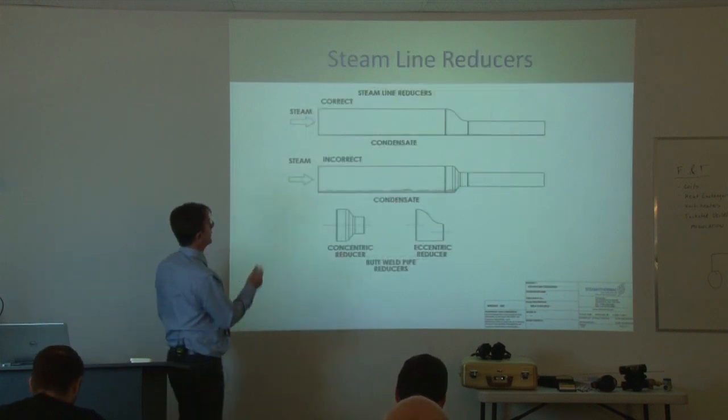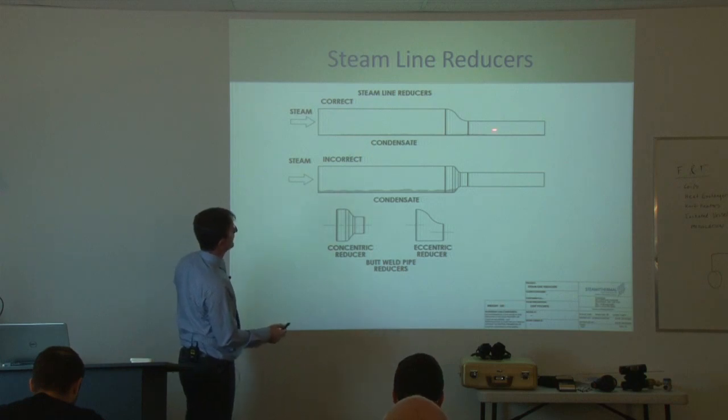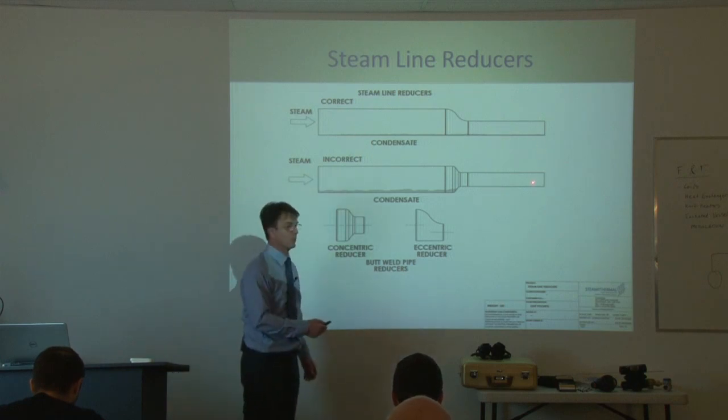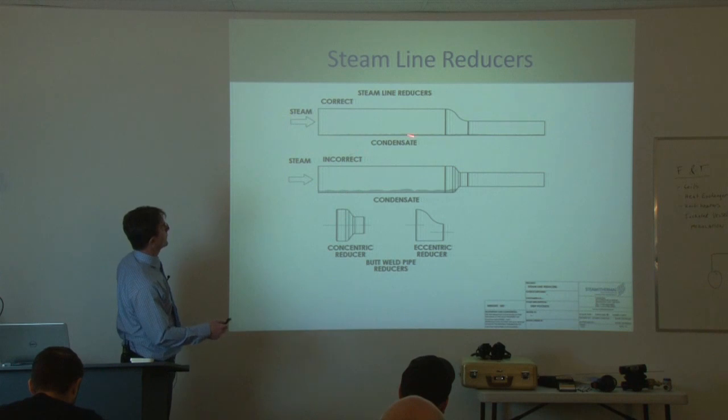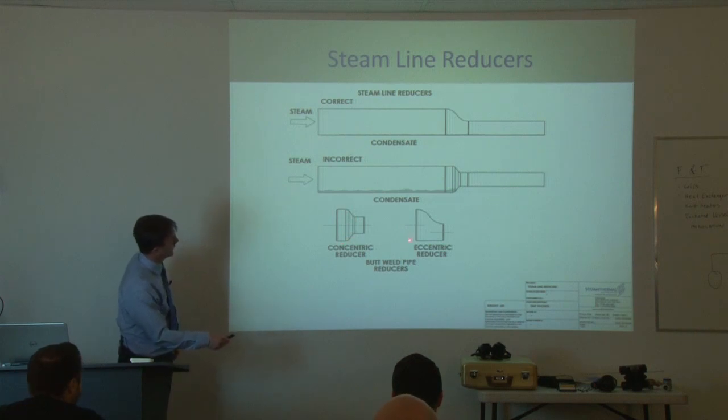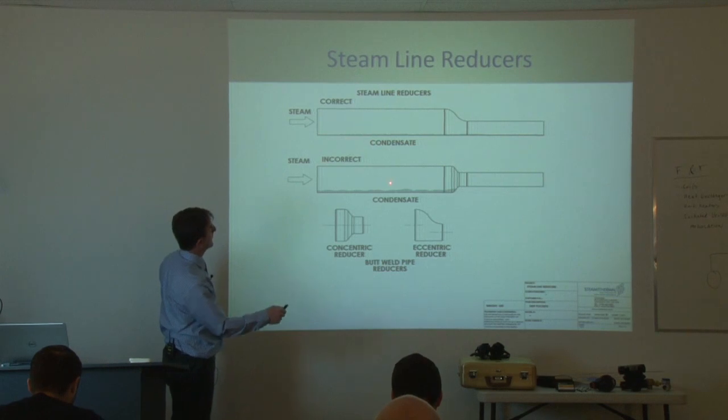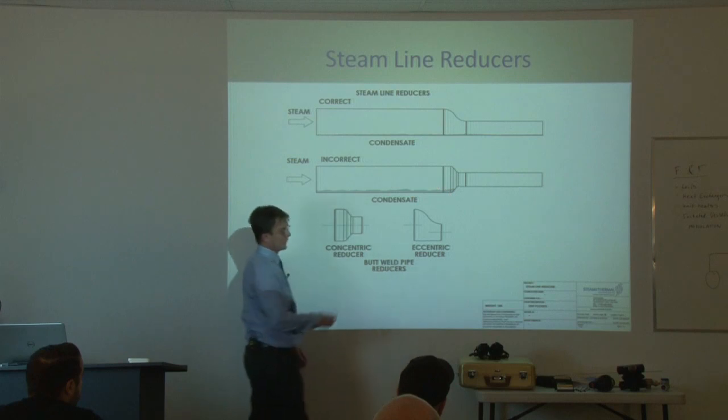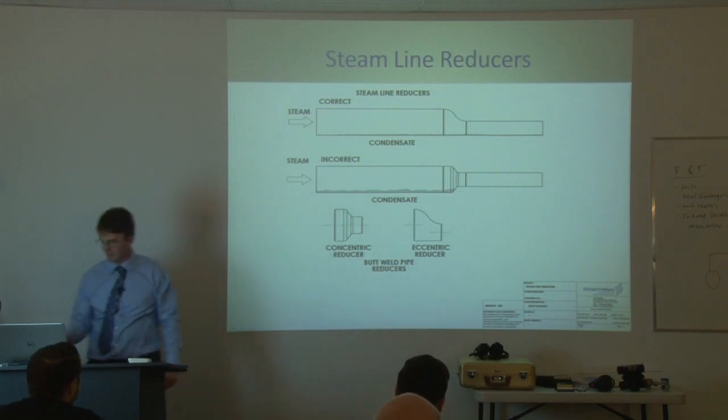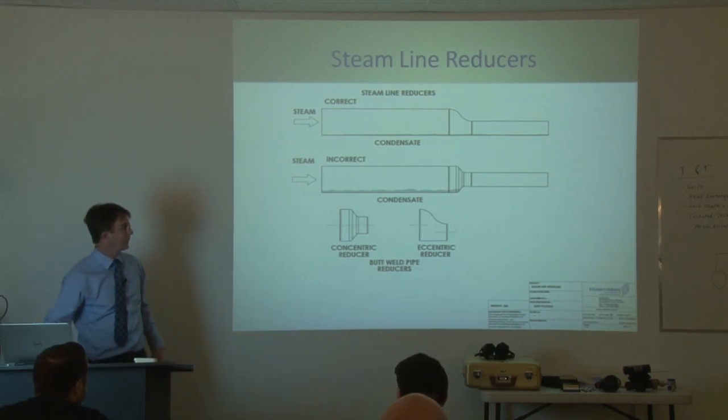And when we're reducing the pipe size, normally when we're going into a control valve or a pressure reducing valve, we'll have to reduce the pipe size. We prefer to see a concentric reducer instead of an eccentric. So the concentric looks like that where it's curved on both sides. Eccentric is flat on the bottom, curved on top. So that way, condensate doesn't have a chance to pool. We're just looking for ways to not having condensate pooling. So this is another one of those little tricks, best piping practices.